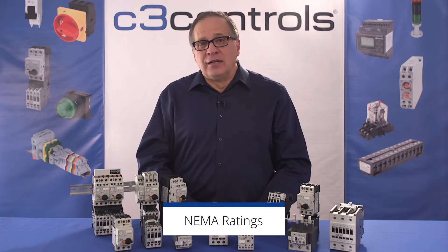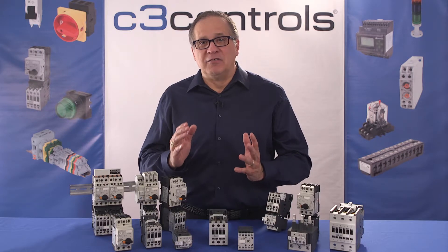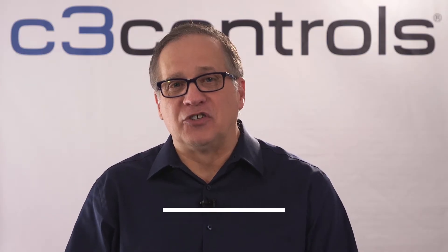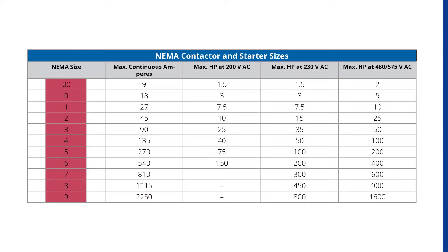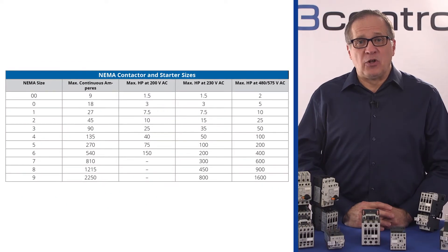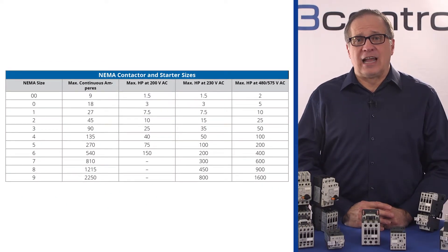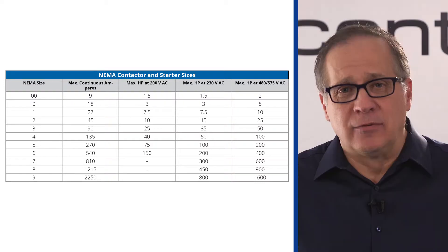The NEMA rating of a starter depends largely on the maximum horsepower ratings given in the National Electrical Manufacturing Association ICS2 standard. The selection of NEMA starters is done on the basis of the NEMA size, which varies from size 00 to size 9. The NEMA starter at its stated rating can be used for a wide range of applications, from simple on-off applications to plugging and jogging applications, which are actually more demanding.